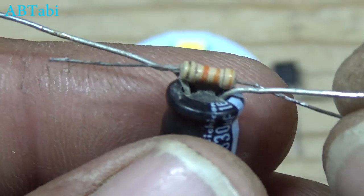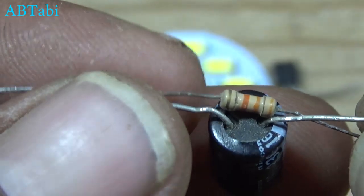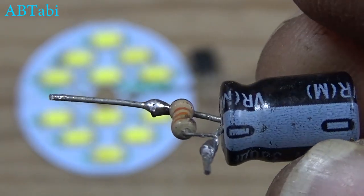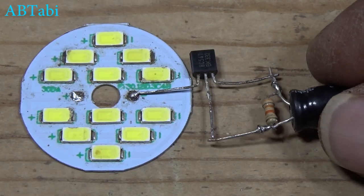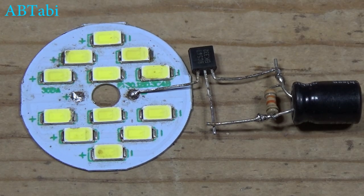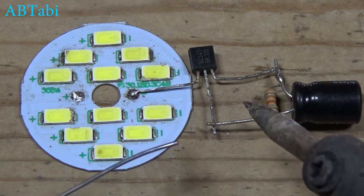Capacitor negative side connects with the transistor emitter and positive side connects with the transistor base.